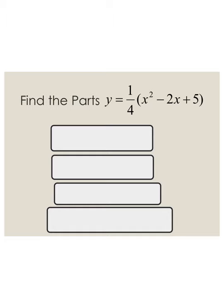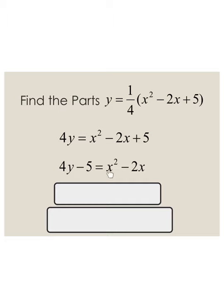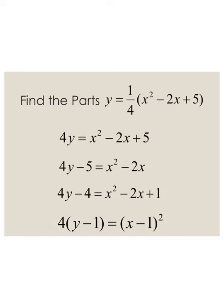For our next example, we need to put the equation in standard form first. I need to deal with the expression and complete the square. My first step is to move the 1/4 to the other side by multiplying by 4, giving me a quadratic. I then move the 5 over by subtracting it, so I can complete the square with x² − 2x. Taking half of the middle term gives 1, and squaring it gives x² − 2x + 1. I add 1 to the left side as well, which gives me −4. I can now factor both sides to get standard form.